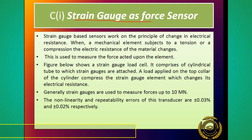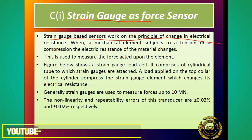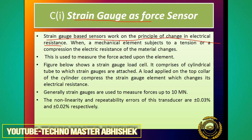Strain gauge, as we have studied before in displacement, is a sensor that works on the principle of change in electrical resistance - electrical प्रतिरोध में जो change होता है उसके सिद्धान्त पे strain gauge sensor काम करता है। As soon as a mechanical element has force applied to it - that force could be tensile force or compression force - its shape will change.